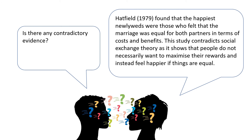Is there any contradictory evidence? Hatfield found that the happiest newlyweds were those who felt that the marriage was equal for both partners in terms of costs and benefits. This study contradicts Social Exchange Theory, as it shows that people do not necessarily want to maximise their rewards and instead feel happy if things are equal.